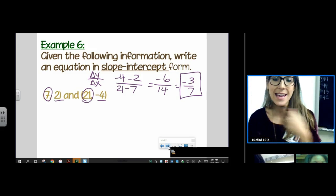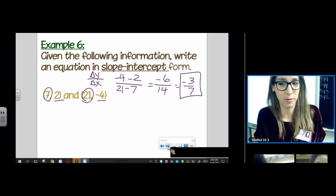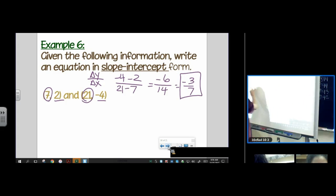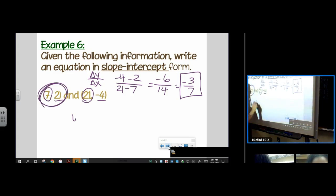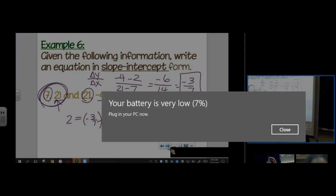So I'm going to do y equals mx plus b. My y is 2. My m is pretty ugly, negative 3 sevenths. Here's my x, which is 7. Y equals mx. We don't know b. We're trying to find b. We don't know b. Oh, thank goodness. Look at that. My sevens cancel. This is pretty. 2 equals negative 3 plus b.